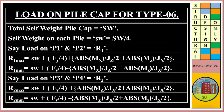R1 Max is equal to SW plus Fy divided by 4, plus absolute Mx divided by Jz, divided by 2. R1 Minimum is equal to SW plus Fy divided by 4, minus absolute Mx divided by Jz divided by 2, plus absolute Mz divided by Jx divided by 2.